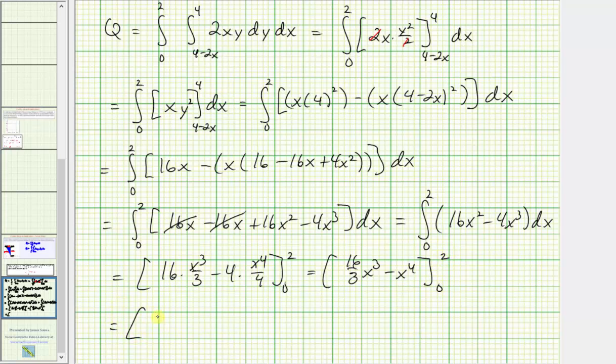So when x is two, we have 16 thirds times two to the third minus two to the fourth. And then minus, notice when x is zero, these will both be zero. And this difference here comes out to 80 thirds, which would be approximately 26.6667. Again, this is charge, so this would be coulombs.